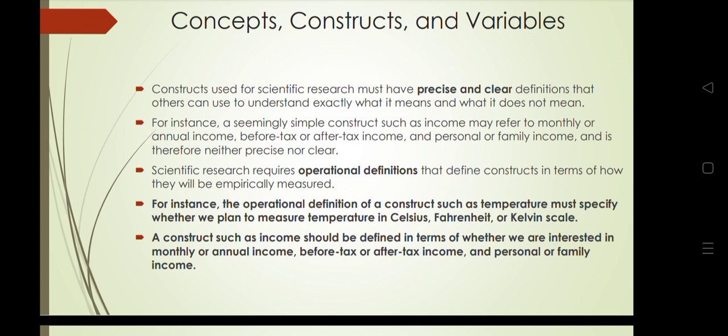Constructs used for scientific research must have precise and clear definitions so that others can understand exactly what is meant and what is not. For example, a simple construct such as income may refer to monthly or annual income, before-tax or after-tax income, or personal or family income. It is therefore neither precise nor clear without specification.